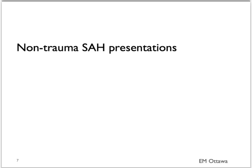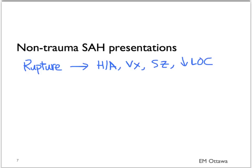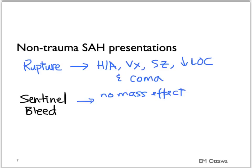How does an aneurysmal subarachnoid hemorrhage present? A ruptured aneurysm will cause significant mass effect on the brain, leading to headaches, vomiting, seizure, decreased level of consciousness, and coma. The sentinel bleed, on the other hand, since it is of small volume, does not produce mass effect on the brain. Therefore, the patient's GCS should be normal and there should be no focal neurological deficits.